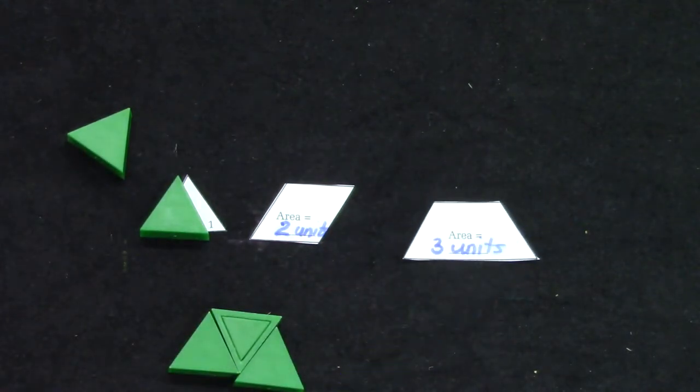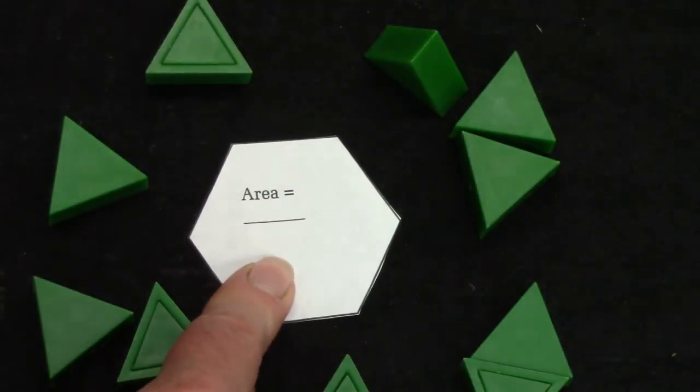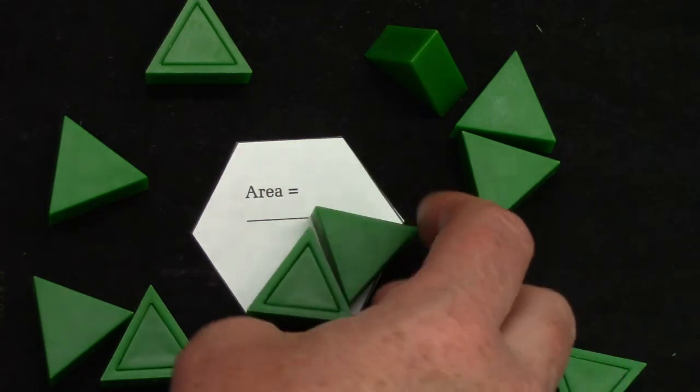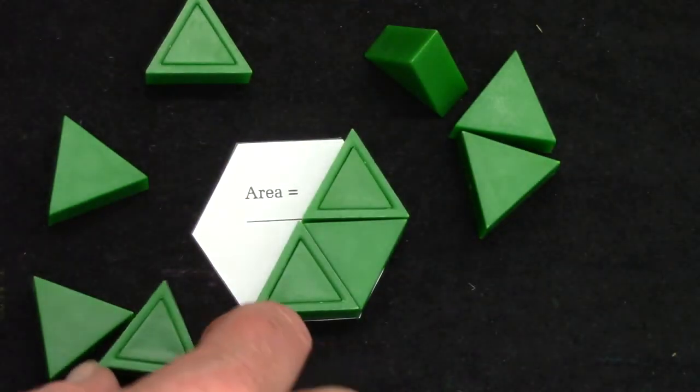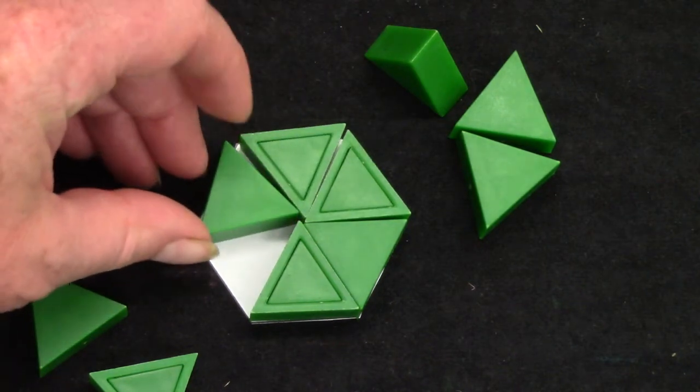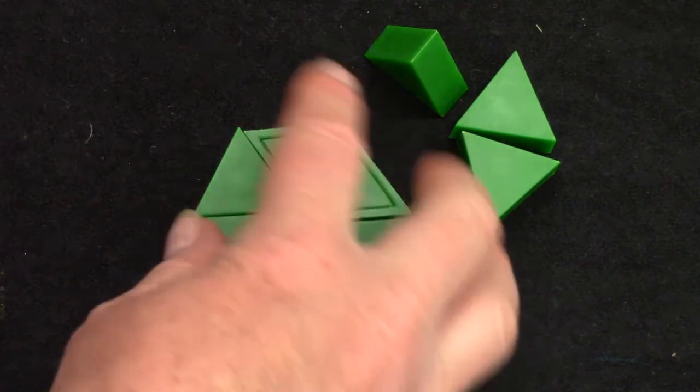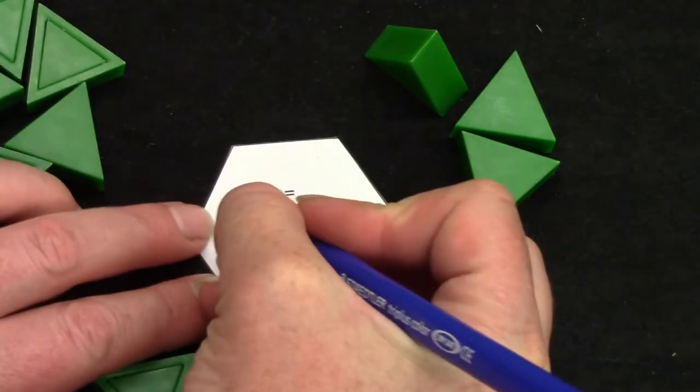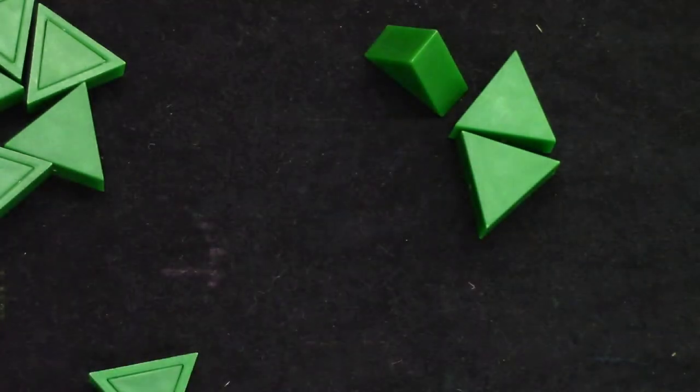Well let's try some bigger shapes. How many triangles do you think it will take to cover the whole area of this hexagon? I want you to try this at home as well if you have some pattern blocks. I have half of it covered with three. How many more am I going to need? Yes. If it took three to cover half, I'm going to need three more. Now I have used six. So the area for the hexagon would be six units.